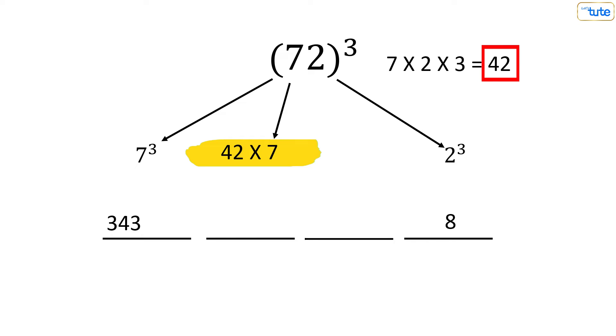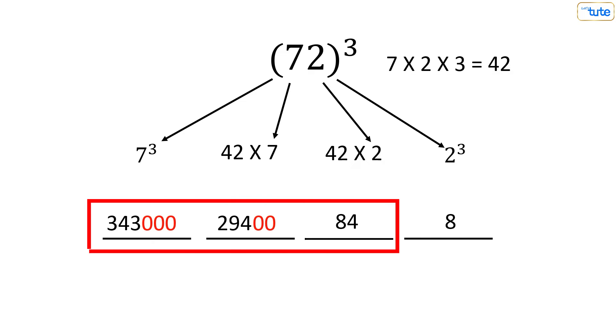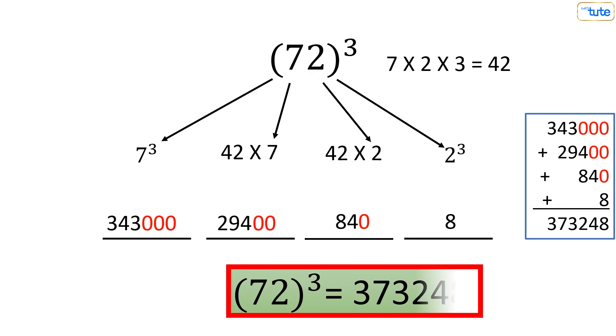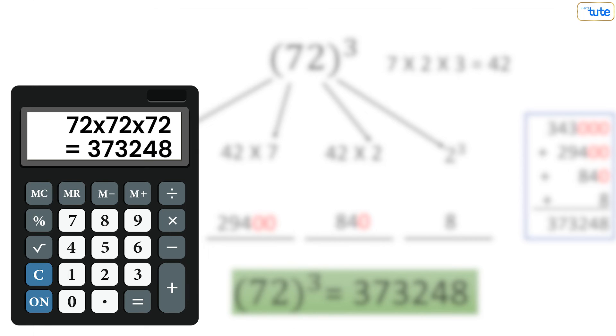For step 3, we'll multiply these two together. So what was the next step? Yes, we have to bring in that army of zeros, and the last step is to add all four numbers. So there you go, the cube of 72 is 373,248. Now you can use your calculator and cross-check the answer.